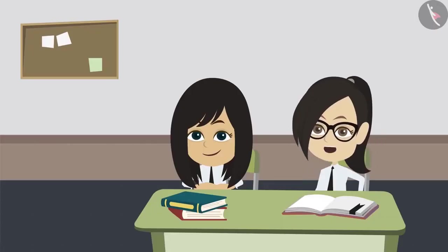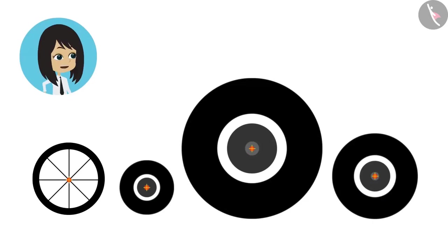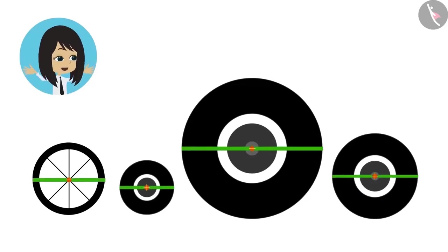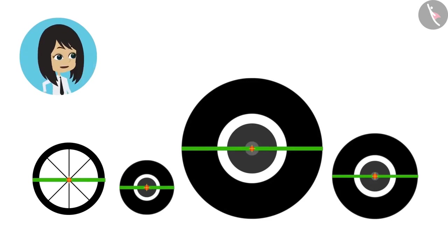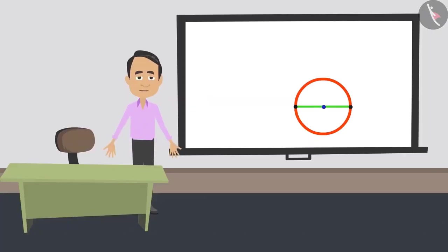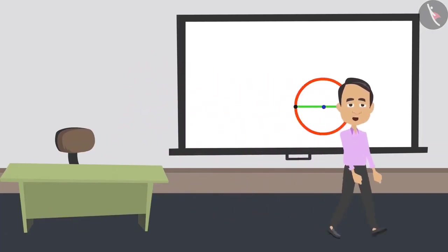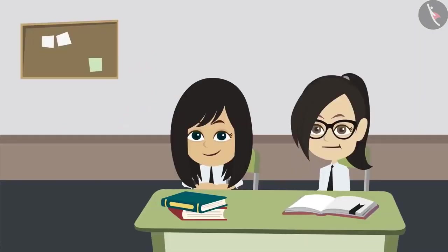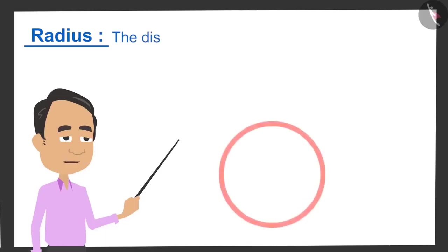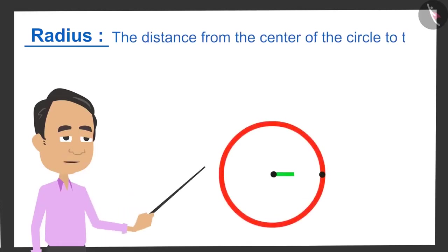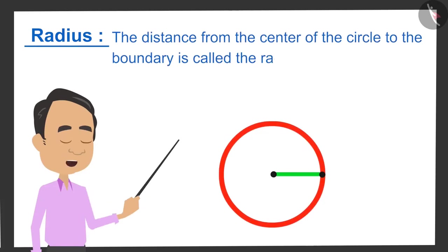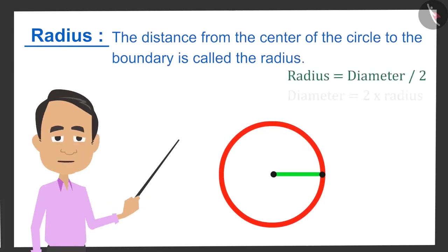This means that we have to measure the diameter to measure the circle. If we measure the diameter of all the wheels, then we can tell the difference between the wheels. Absolutely right. But before that, you should know another property of a circle. Sir, what is a radius? The distance from the center of the circle to the boundary is called radius. It is half of the diameter.